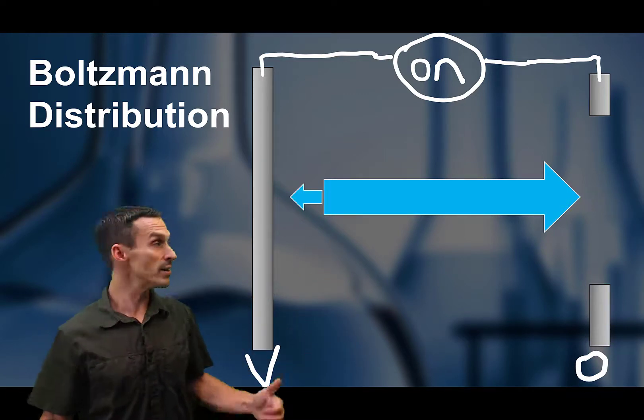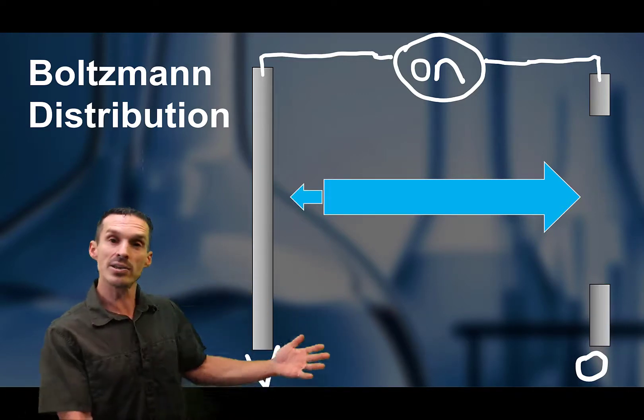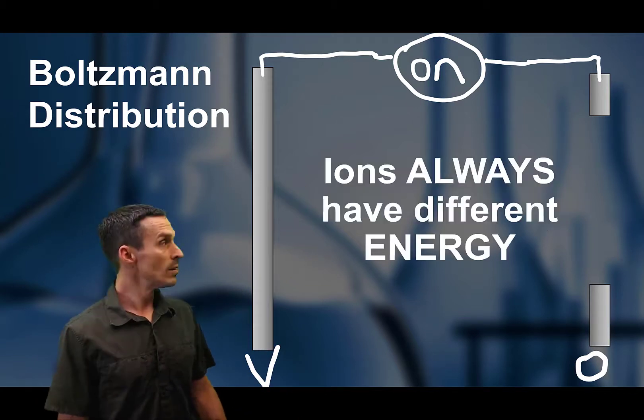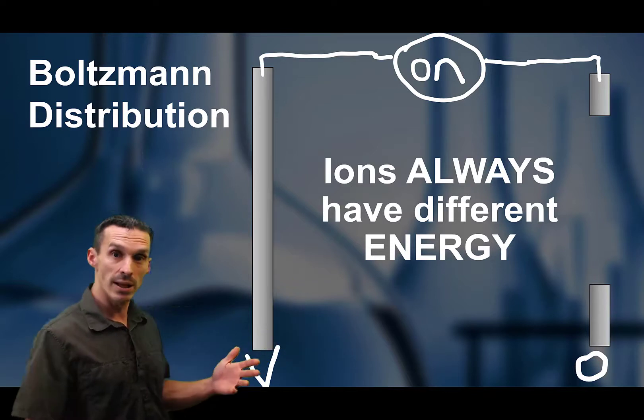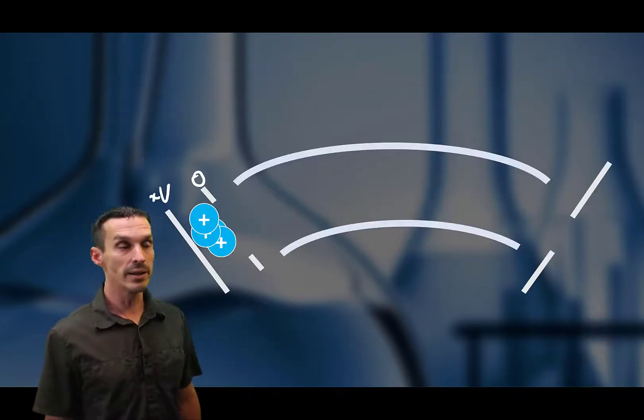Of course, if the ion is in the other direction, then it takes away some of the total energy of the ions. So no matter what, all of the ions are going to have slightly more or slightly less energy. So let's look at it now.